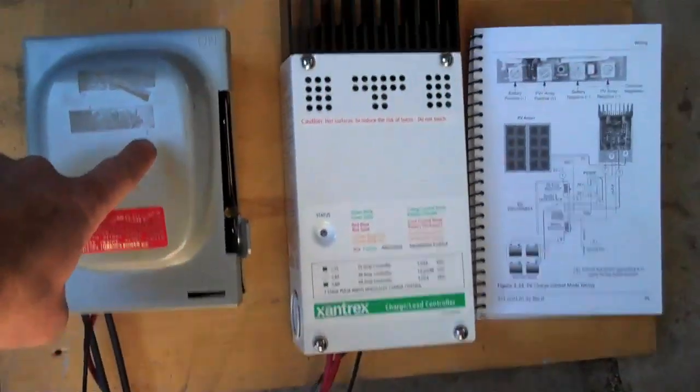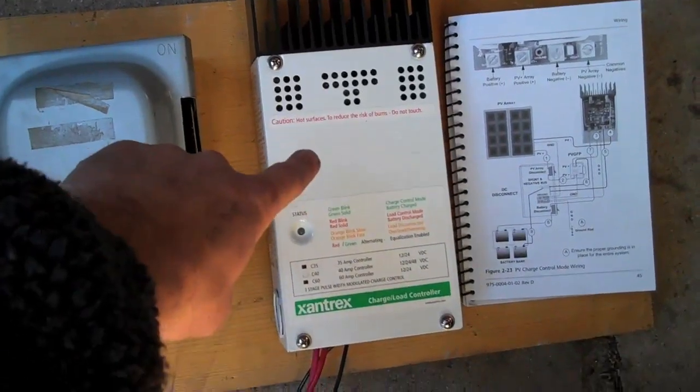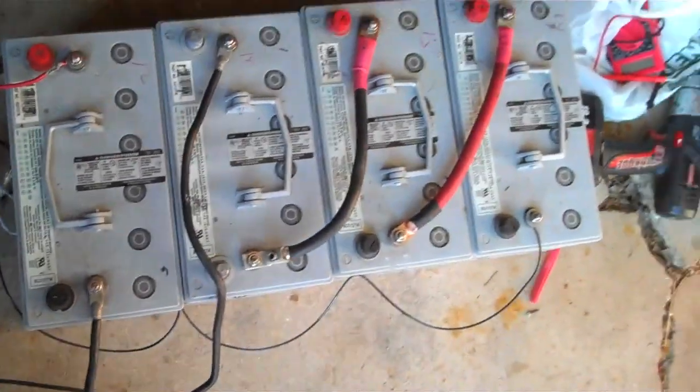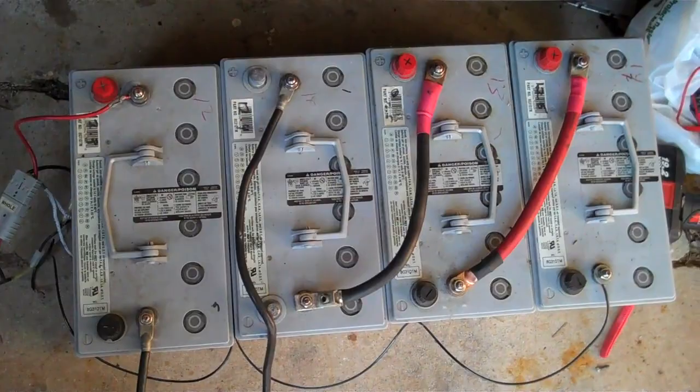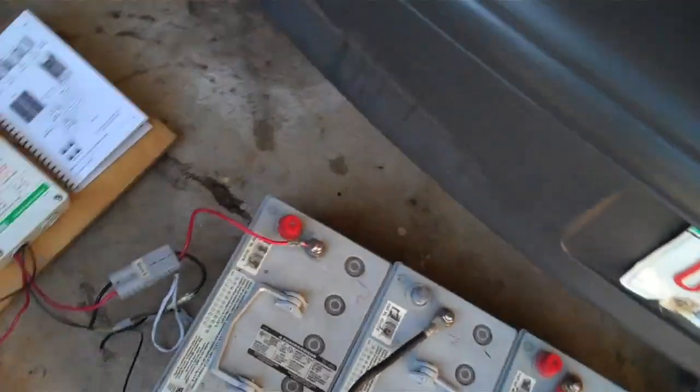So right now I've got a disconnect for the PV panels and the charge controller. Over here I have a 48 volt battery pack. It's just 12 volts hooked up in series.